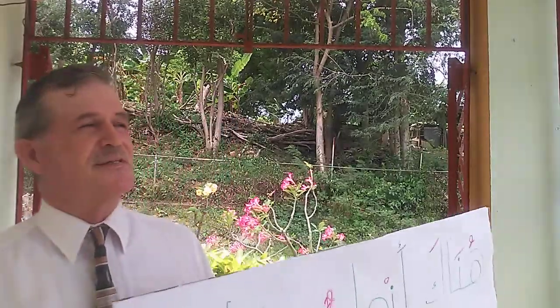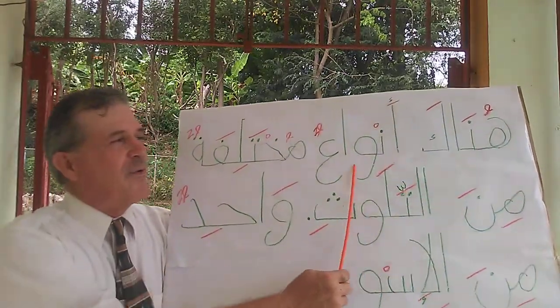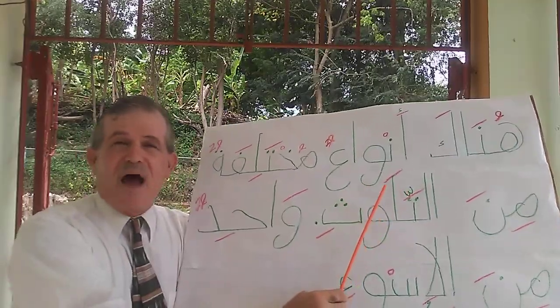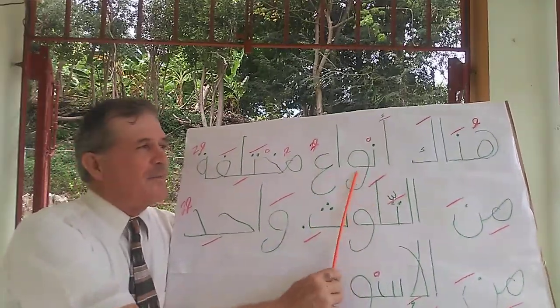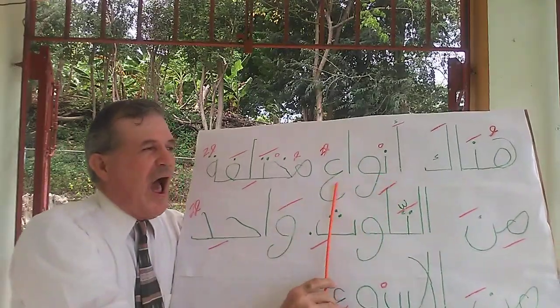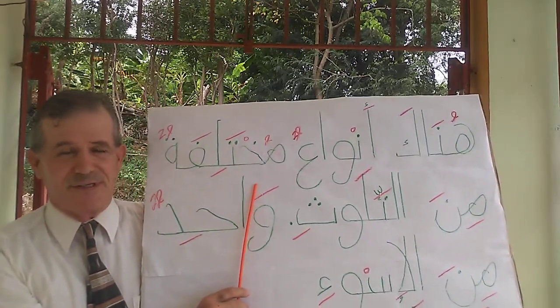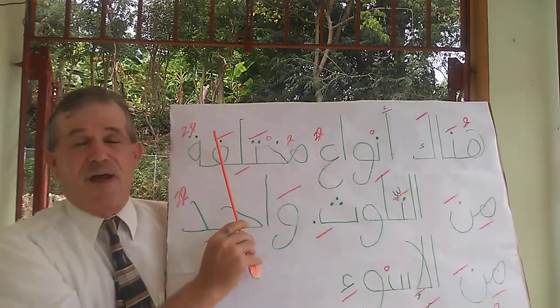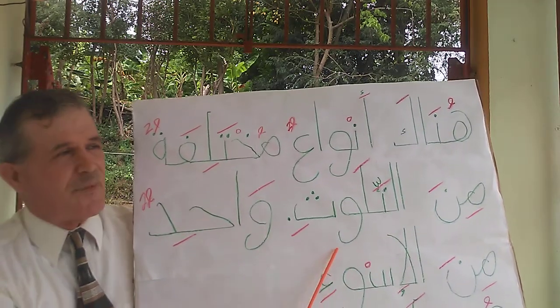In modern standard Arabic, we start with 'hunaka,' meaning 'there.' In a formal classroom setting I pronounce it 'hunaka.' 'Hunaka anwa'un' — 'anwa'' means kinds. 'Naw'' is a kind, 'anwa'' is the plural. With tanwin: 'anwa'un.' Then 'mukhtalifatun' — feminine for 'different,' one way to say different in Arabic. 'Mukhtalif,' masculine; 'mukhtalifa,' feminine; 'mukhtalifatun' with tanwin to match the subject. Then 'min at-talawuth' — of pollution.